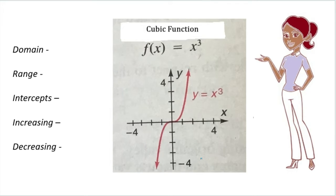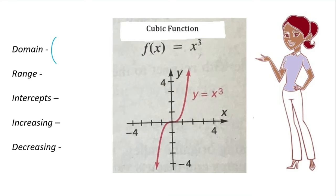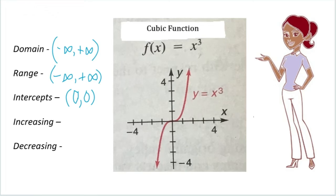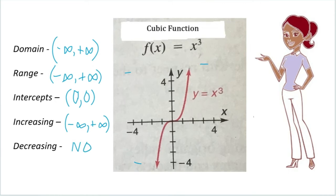Here is our parent function for a cubic function. The domain is all real numbers, negative infinity to positive infinity. The range along the y-axis also goes from negative infinity to positive infinity. The intercept is at (0, 0). Starting at the bottom going up, it is increasing from negative infinity to positive infinity. Looking at whether it is decreasing — it does not appear that the cubic function parent function is decreasing, so we have no decreasing.